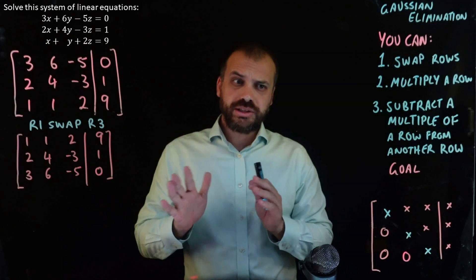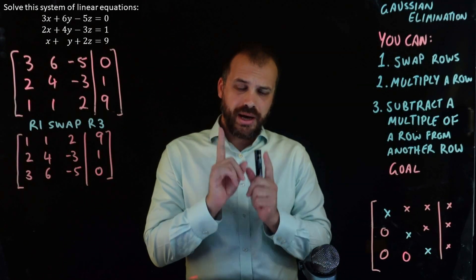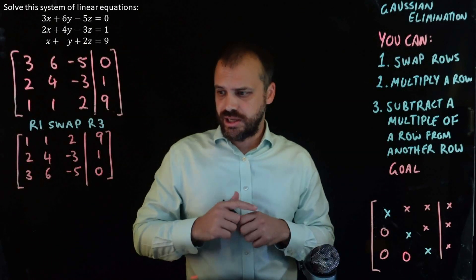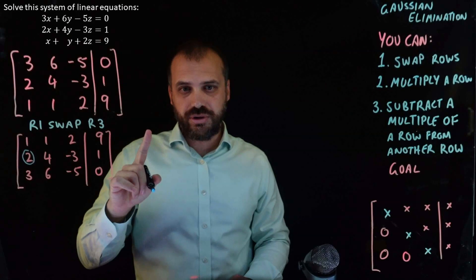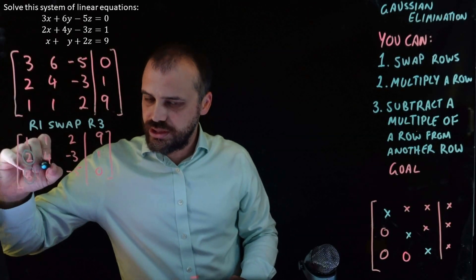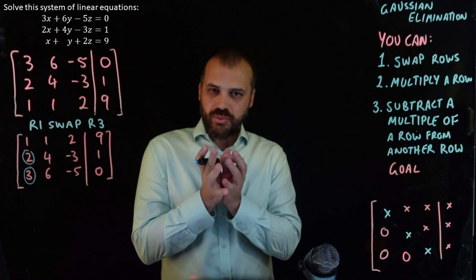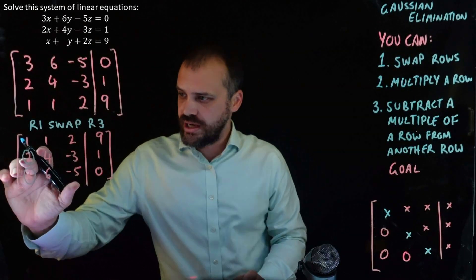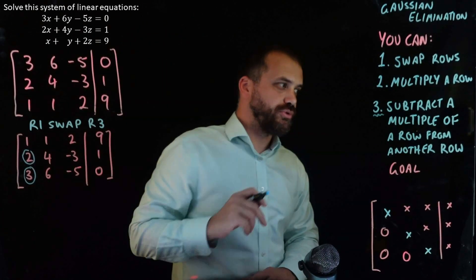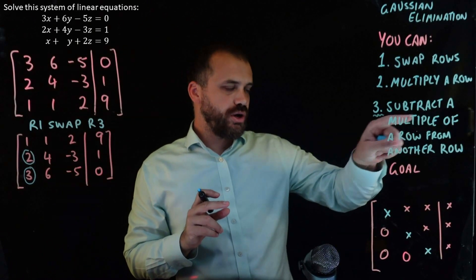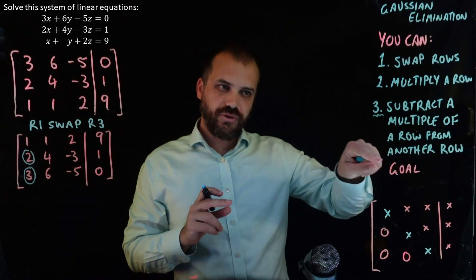Okay, now rarely do you have to do that swap. But this next step is where the game really starts. Now what you're trying to do is turn this into a zero and turn this into a zero. And the best way, the way, to turn that into a zero and that into a zero is to use this rule here.